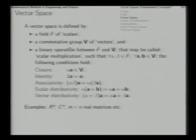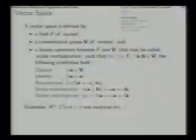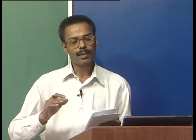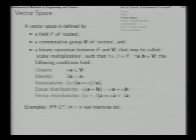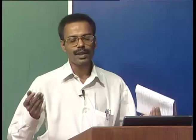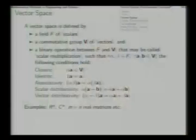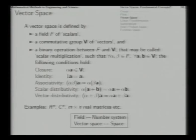R^n, C^n — that is, n-dimensional real coordinate vectors and n-dimensional vectors with complex coordinates — are all examples of vector spaces over the field of real numbers or complex numbers respectively. M-by-n real matrices also form a vector space of their own. The field is an abstraction of the number system, and the vector space is actually an abstraction of the ordinary geometric space in which we live.